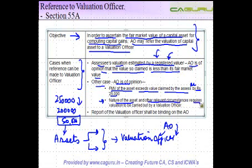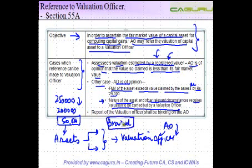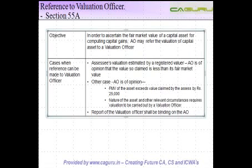The third case is where the nature of the asset and other relevant circumstances require the valuation to be carried out by the valuation officer. For example, in the case of valuing a brand, that is very difficult and the AO may not possess the necessary expertise. The nature of the asset itself warrants that some expert be brought in, and in that case the AO can refer the matter to the valuation officer.